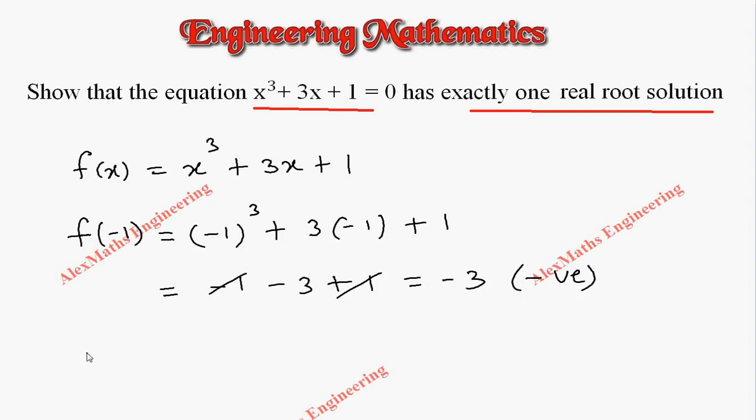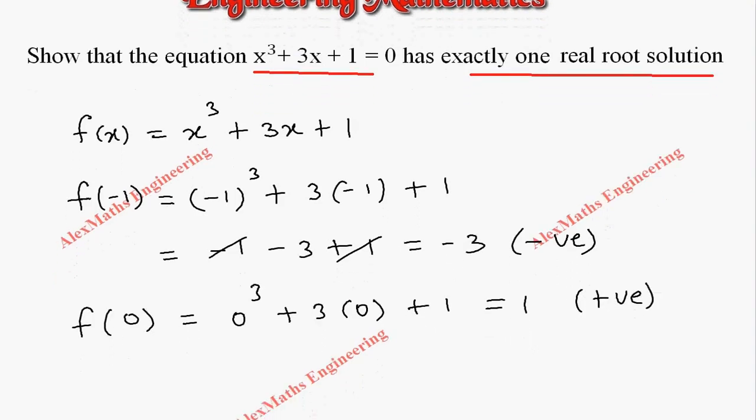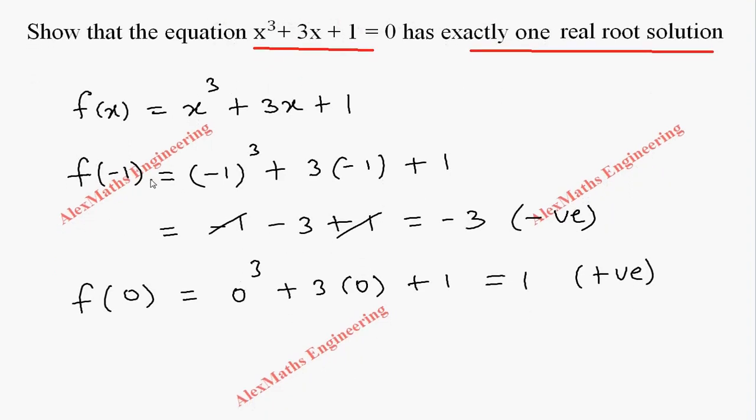This is a negative value. Similarly we will take another value, for example 0, so that the function value becomes positive. So we get f(0) = 1 which is positive. Since there is a sign change, we can say that one root exists between -1 and 0.